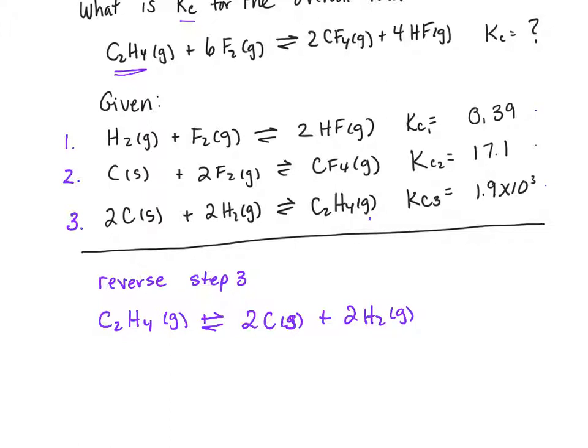Now, because we reverse the reaction, we need to change K in the appropriate way. When you reverse a reaction, the new K, and I'm going to call this K prime 1, is the inverse of the original K. So it's going to be the inverse of 1.9 times 10 to the third. I'm just going to leave it like that for now.